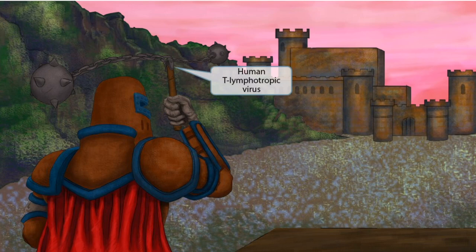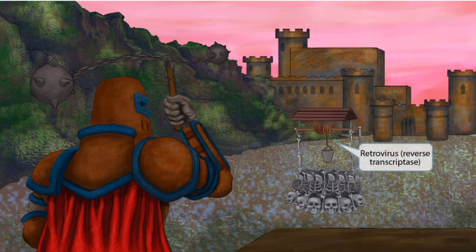This scene takes place back during the time of castles and knights. Front and center, there's a noble knight with a two-sided flail shaped like a T. The T-shaped flail in the knight's hand should help you remember that this is an image about human T lymphotropic virus.